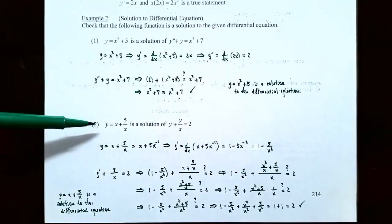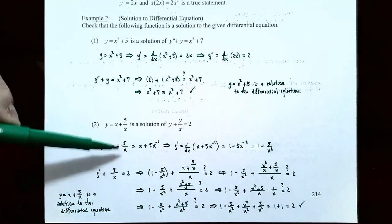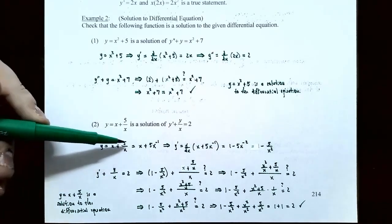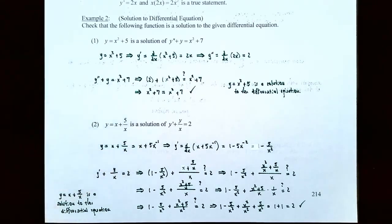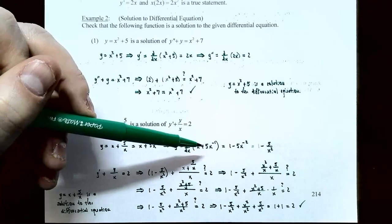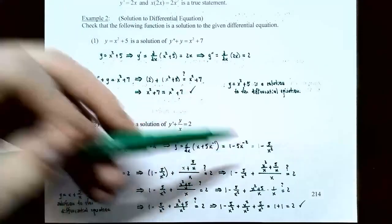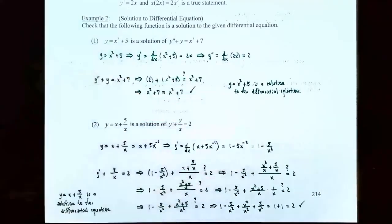Number two: check whether y equals x plus 5 divided by x is a solution to y prime plus y divided by x equals 2. Rewrite y as x plus 5x to the negative 1. Taking the derivative: y prime equals 1 minus 5x to the negative 2, or 1 minus 5 divided by x squared. Now substitute into the differential equation: 1 minus 5 over x squared, plus (x plus 5 over x) divided by x.